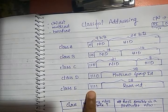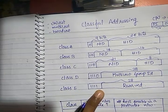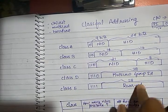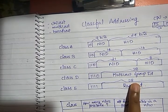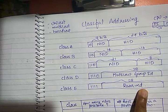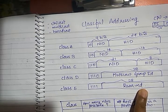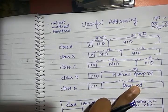Class E: the most significant 4 bits are for identification, but the remaining bits have no specific meaning defined — they are reserved for future use. Class E is actually used for experimental purposes, such as when a new protocol is created and needs to be tested for functionality.